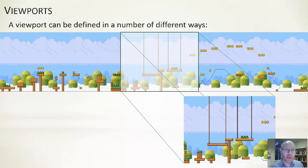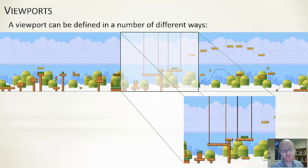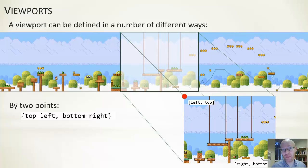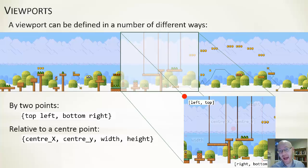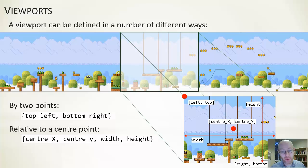There are different ways in which we can define a viewport, and this is important whenever we get down to the level of coding it. You can see a graphic here where we have a Mario-esque game where we are displaying a rectangular region to represent our viewport - whatever is viewable within that viewport gets to be rendered on screen. This comes down to different ways you can use to represent a rectangle. One is by having two points: the top-left and bottom-right corners. Another way is to have a center point and then the width and height of the viewport. They're both equivalent.